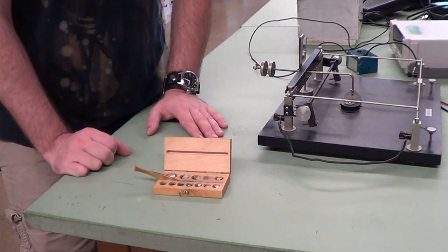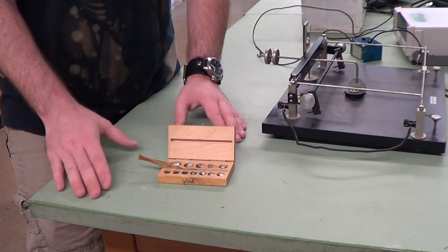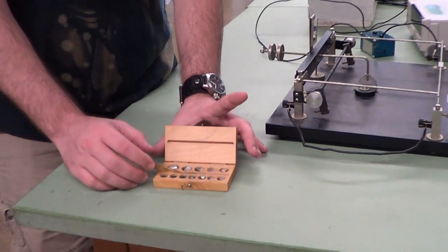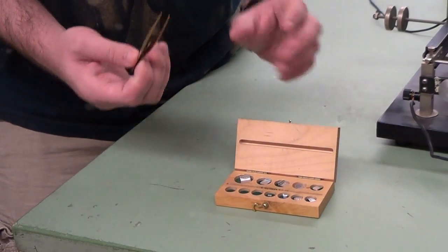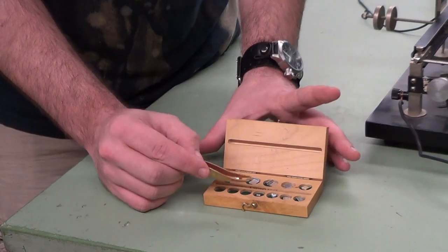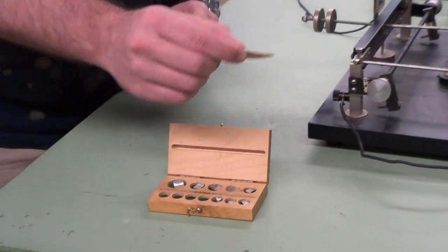All right, so over here we have the masses that you're going to be using today. An important note about the masses is when you're using them, do not use your fingers to handle them. Instead, use the tweezers that are contained within the boxes. And then when you use the masses, you're going to pick them up and you're going to put them on the little tray on the top wire.